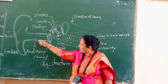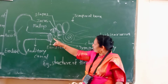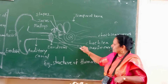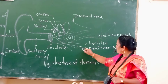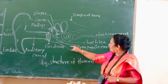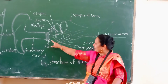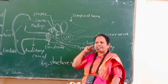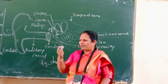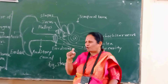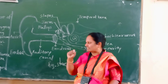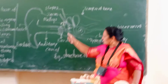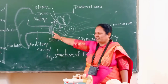The external ear consists of the auricle, ear globe, and auditory canal. That auditory canal is connected to the pharynx with the help of the Eustachian tube, which connects the auditory canal to the pharynx. Therefore, at the time of common cold, you can sense the congestion of the pharynx and nose with the ear.